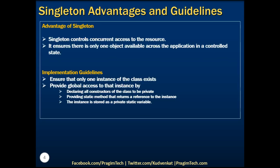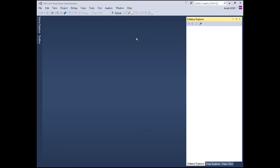Concurrent access to a resource is well managed by the singleton design pattern. As part of the implementation guidelines, we need to ensure that only one instance of the class exists by declaring all constructors of the class to be private. Also, to control the singleton access, we need to provide a static property that returns a single instance of the object. Now let's flip to Visual Studio and see this in action by implementing a singleton class.